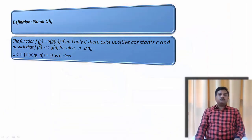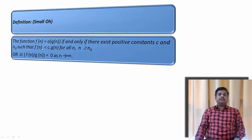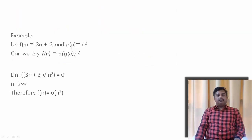Let us start with the definition of small o. The function f(n) is small o of g(n) if and only if there exist a positive constant c and n0 such that f(n) is strictly less than c·g(n). In Big O notation it was less than or equal to; here under small o it is strictly less than. In limit definition: lim[f(n)/g(n)] = 0 as n → ∞. For example, f(n) = 3n + 2 and g(n) = n². Can we say f(n) is small o of g(n)? Taking the limit: lim[(3n + 2)/n²] = 0 as n → ∞. Therefore f(n) is small o of n².